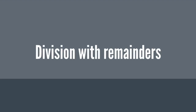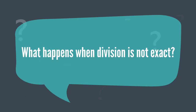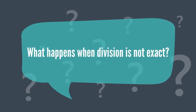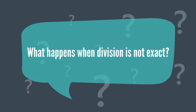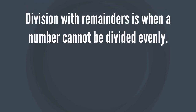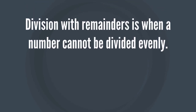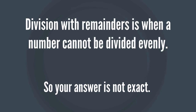Division with remainders. What happens when division is not exact? Division with remainders is when a number cannot be divided evenly, so your answer is not exact.